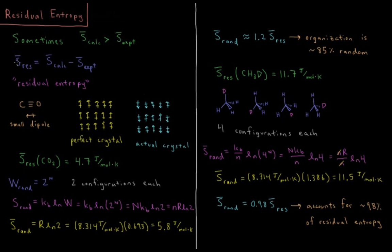We're going to define a quantity called the residual entropy, and this is going to be the difference between our calculated entropy and the experimental molar entropy. So let's see where this comes from now. The third law of thermodynamics assumes that the entropy of a perfect crystal at zero Kelvin is zero.